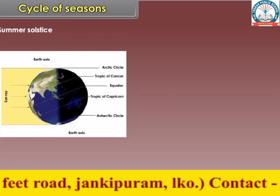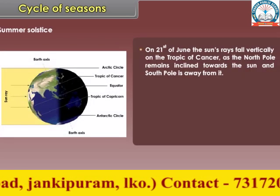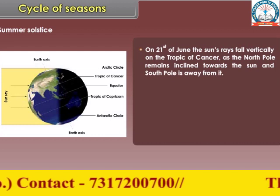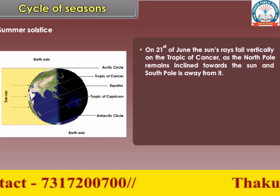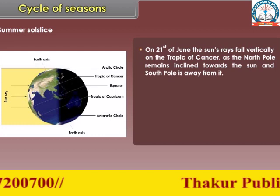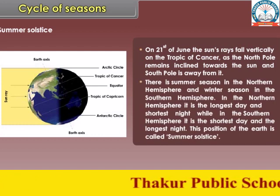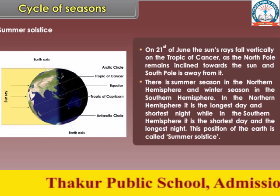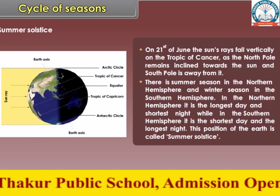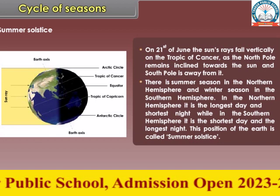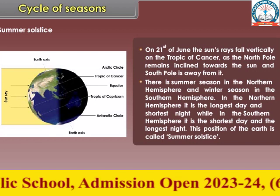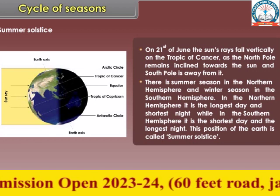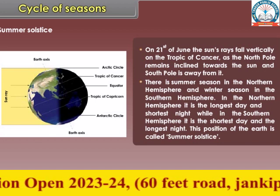Summer solstice: on 21st June, the sun's rays fall vertically on the Tropic of Cancer as the North Pole remains inclined towards the sun and the South Pole is away from it. There is summer season in the Northern Hemisphere and winter season in the Southern Hemisphere. In the Northern Hemisphere, it is the longest day and shortest night, while in the Southern Hemisphere, it is the shortest day and the longest night. This position of the earth is called summer solstice.